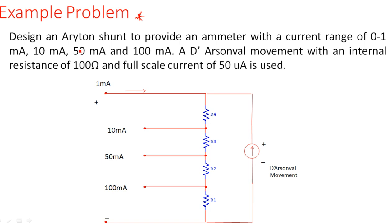Design an R8N shunt to provide an ammeter with a current range of 0 to 1 mA, 10 mA, 50 mA, and 100 mA. A D'Arsonval movement with an internal resistance of 100 Ohms and a full-scale current of 50 microamperes is used. Four current ranges are given, so we take four resistors: R1, R2, R3, and R4, corresponding to current ranges 1, 10, 50, and 100 mA.